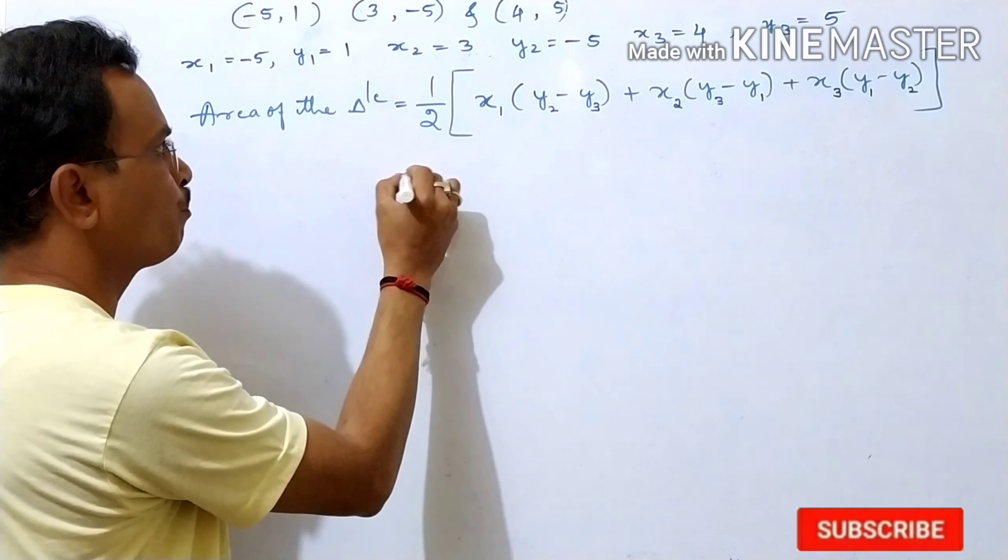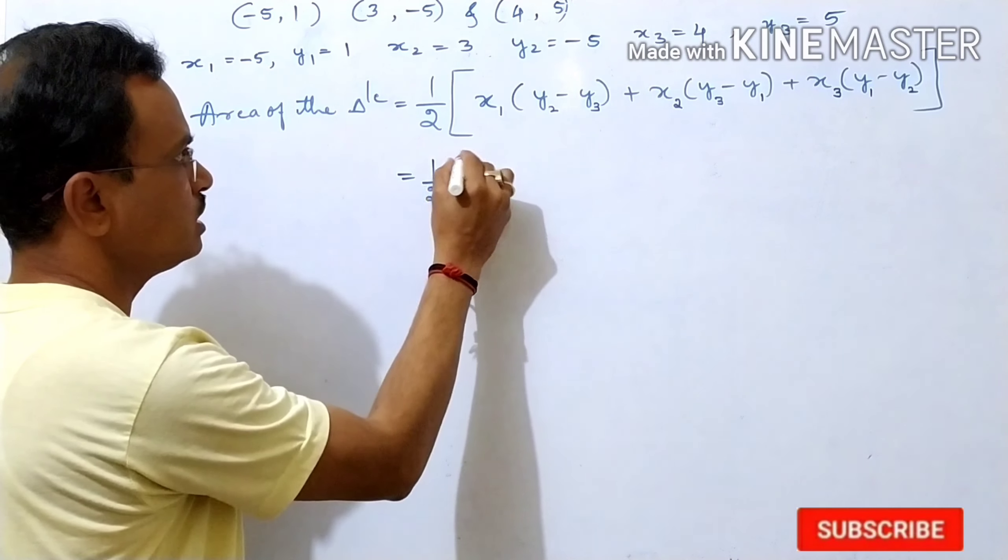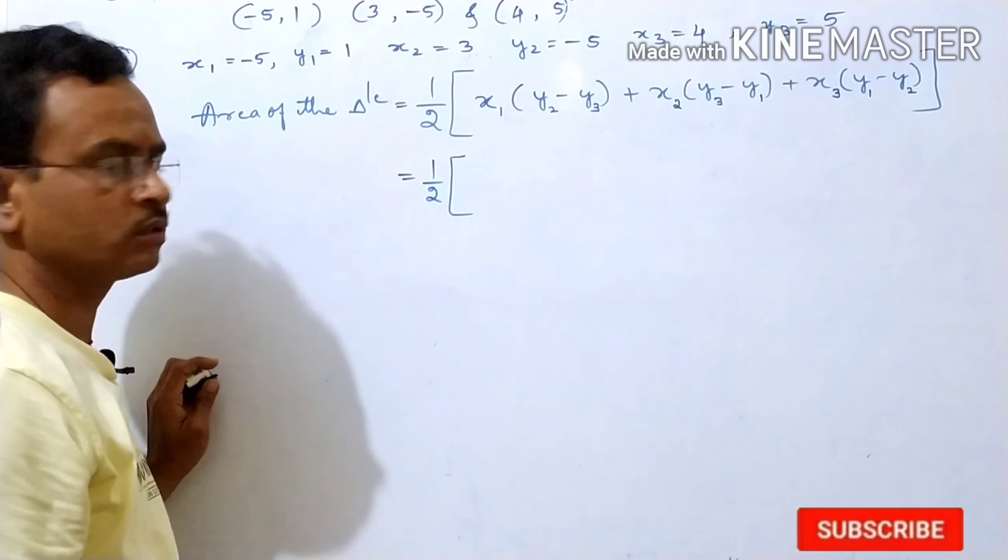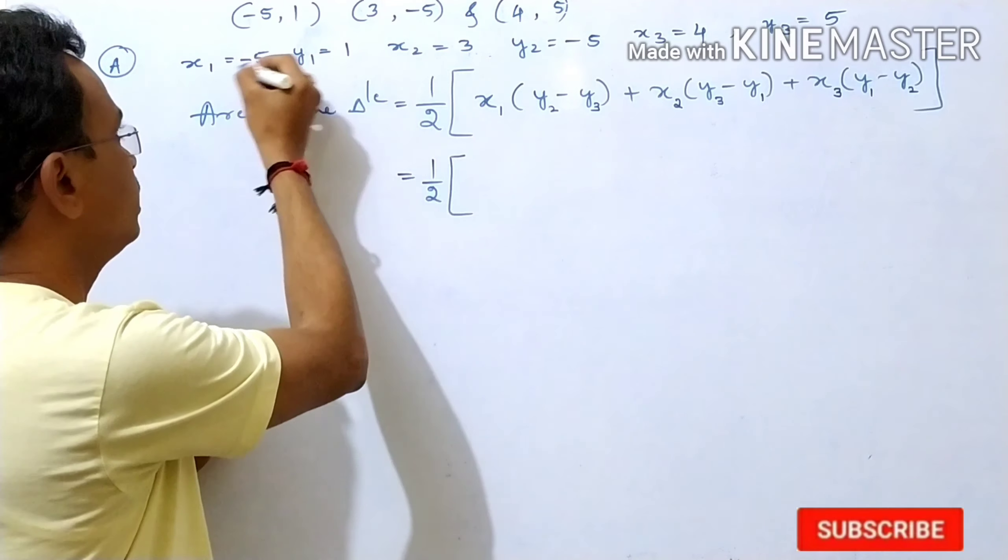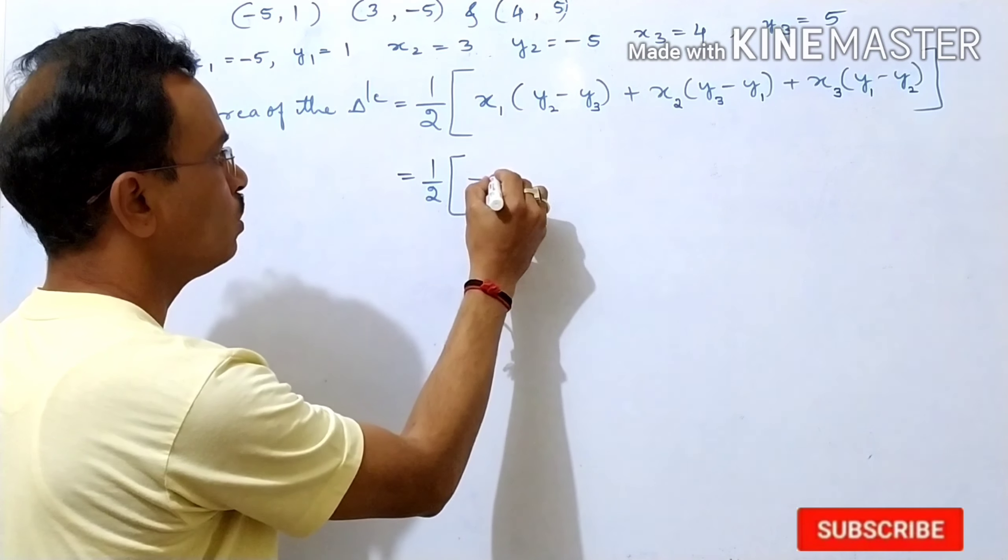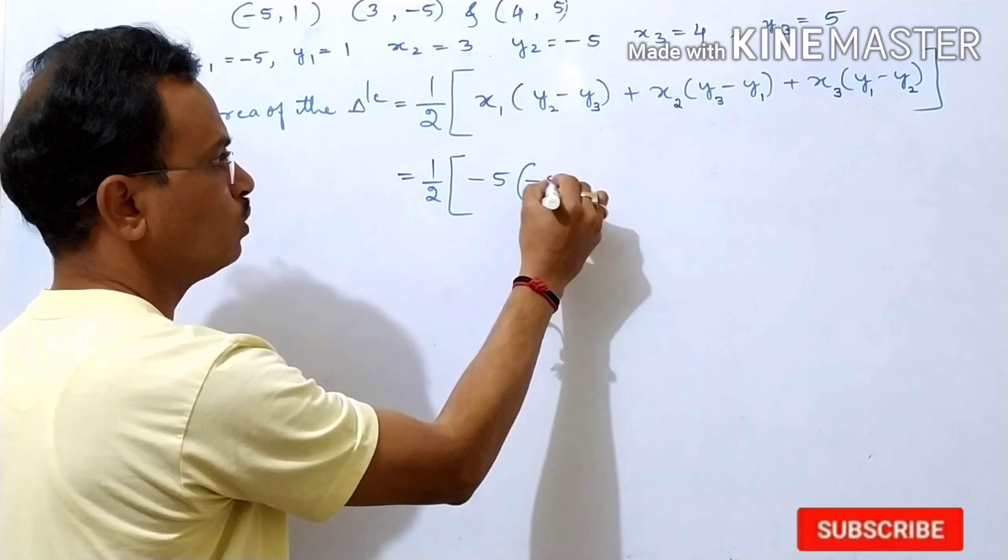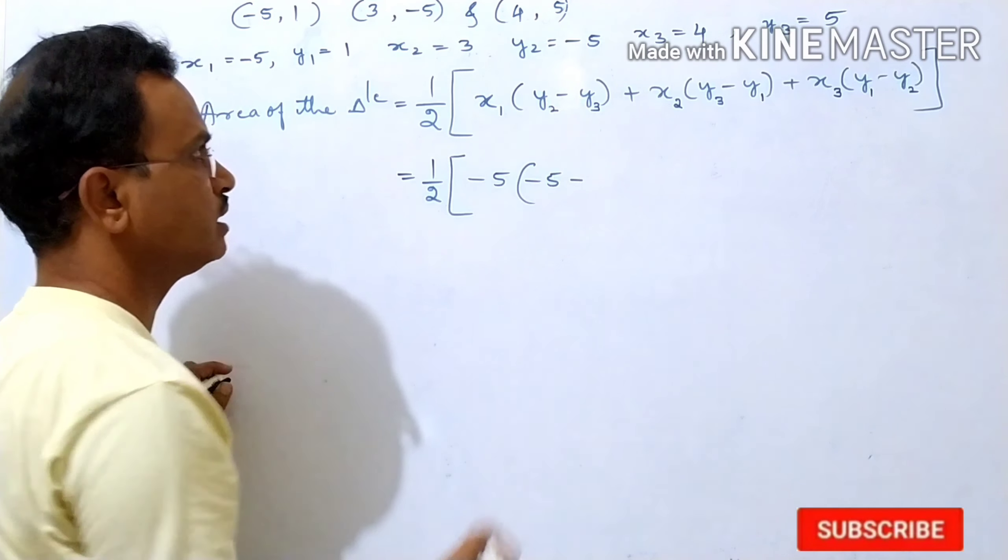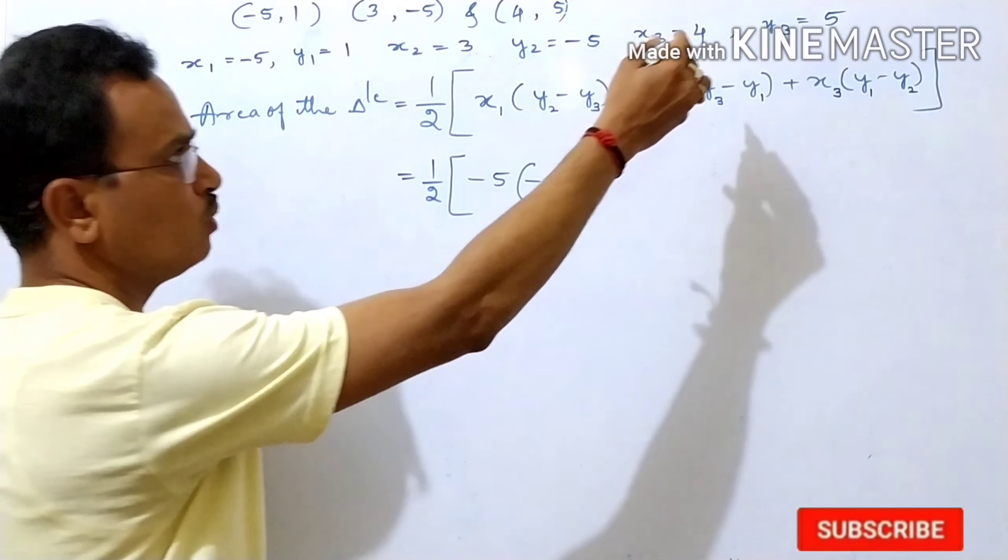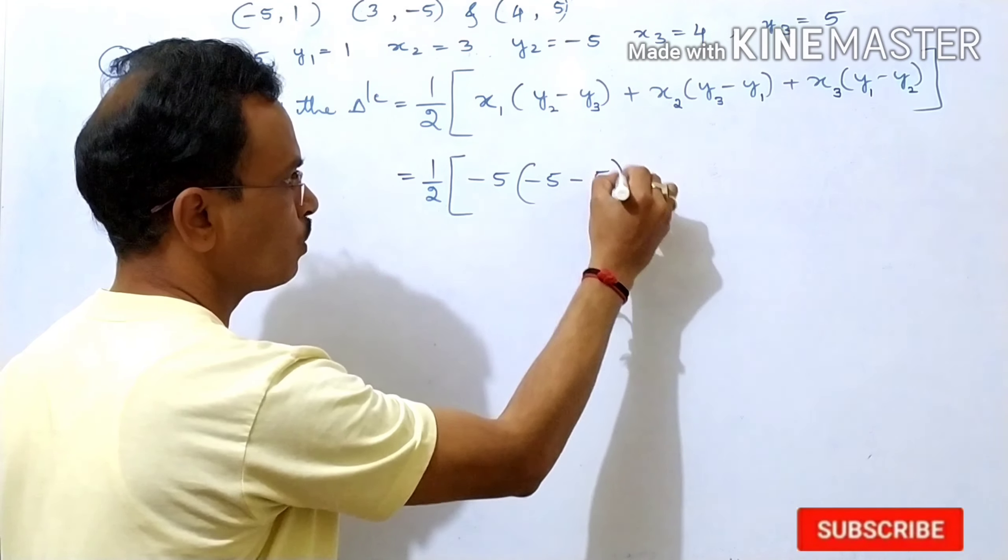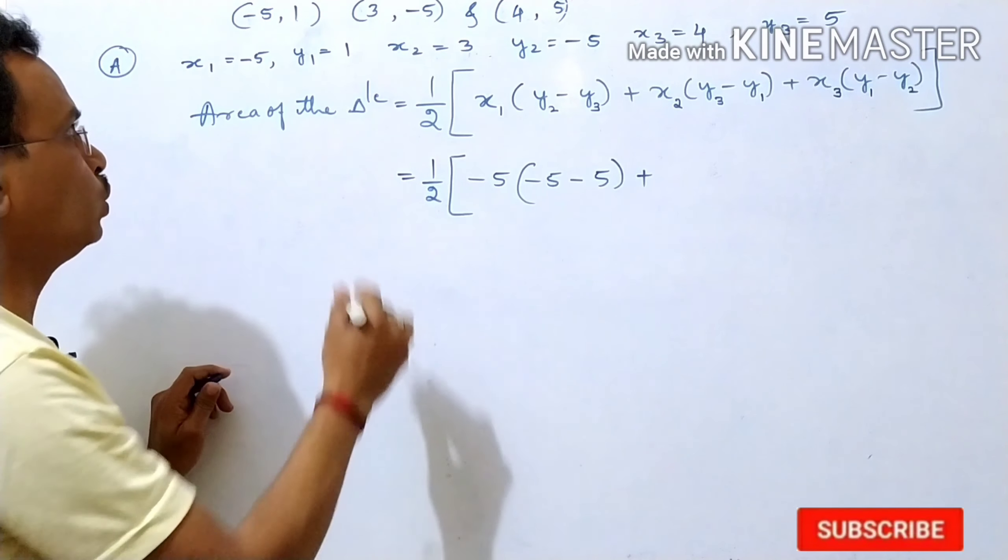Then you should write the formula. 1 by 2 as it is. Now x1, what is x1 here? Minus 5, then y2 minus 5, minus, keep minus as it is. y3 what is there? 5, then plus x2.